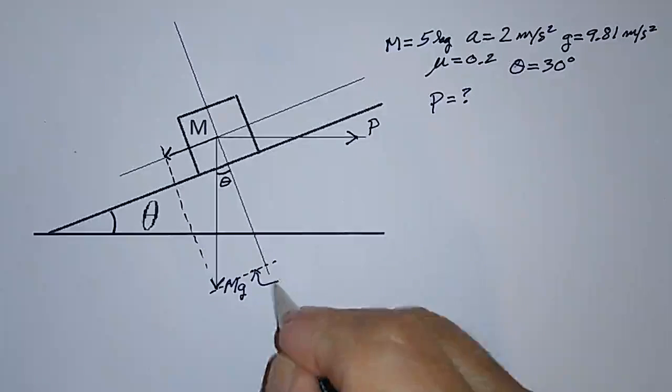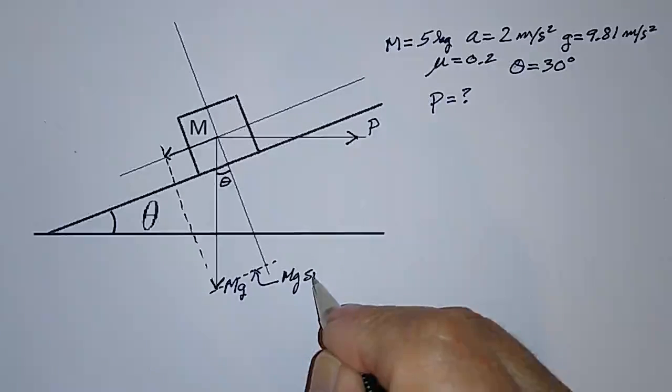So that means that this is M times G times sine theta.